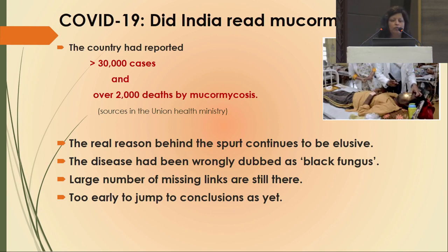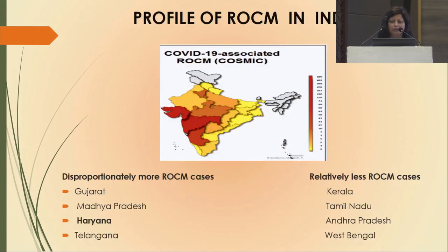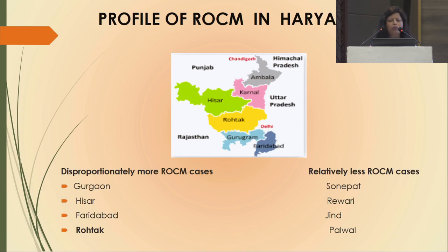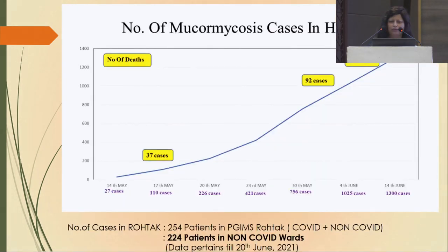The disease was wrongly dubbed 'black fungus.' A disproportionate increase in ROCM cases was seen in Gujarat, Madhya Pradesh, and Haryana, with Gurgaon, Hisar, Faridabad, and Rohtak more involved. Cases in Haryana started on 14th May with 27 cases; by 14th June there were 1,300 cases and 124 deaths. At Rohtak, where I was the ophthalmology nodal officer, 254 patients were reported.